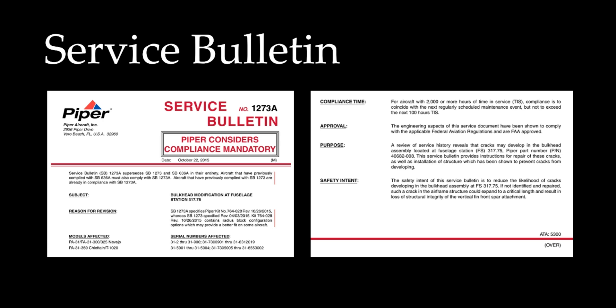In here you can see the details of modifications for a new product release, which can be embodied in an aircraft. An SB document structure may vary from manufacturer to another, but all SBs should contain the main titles.